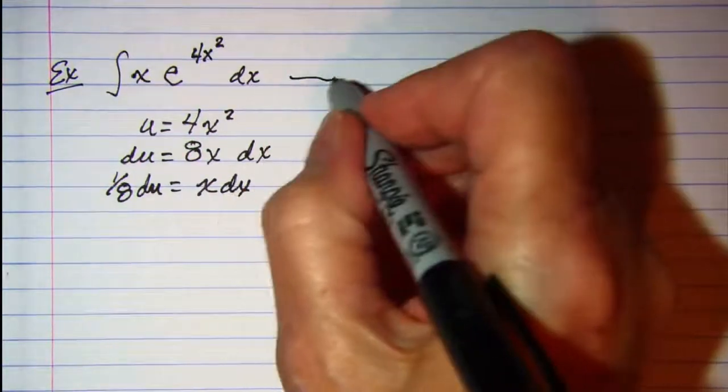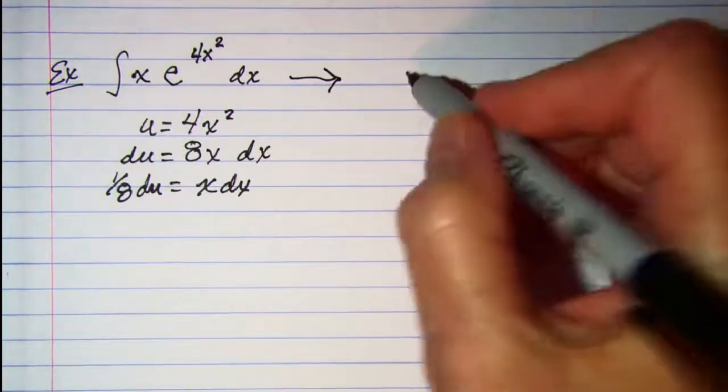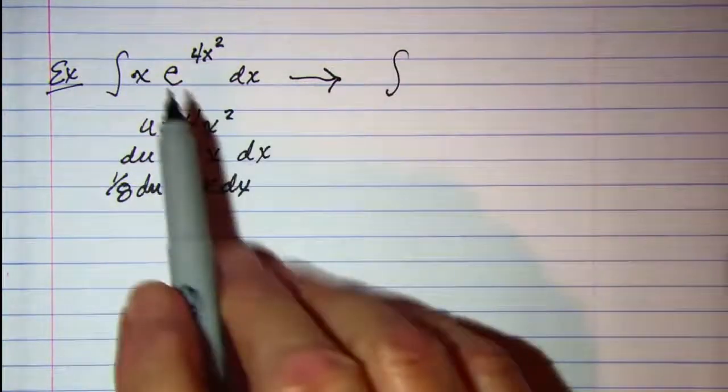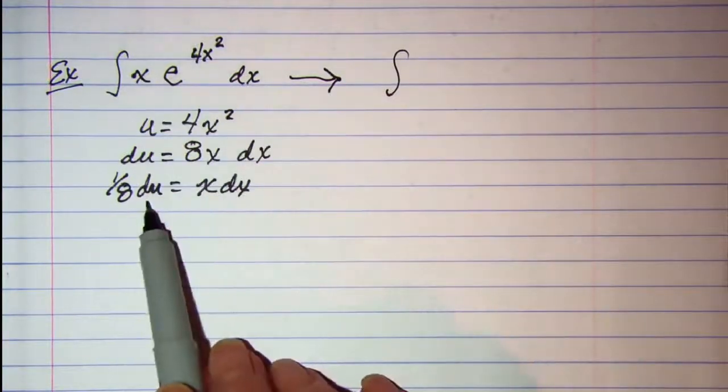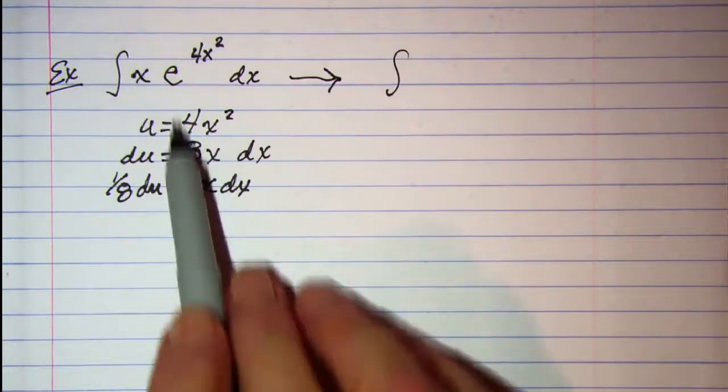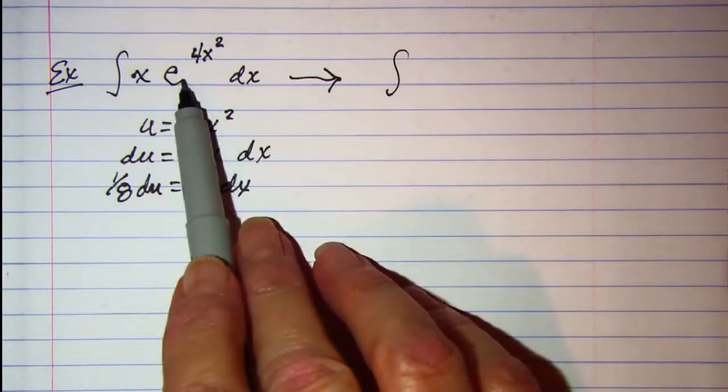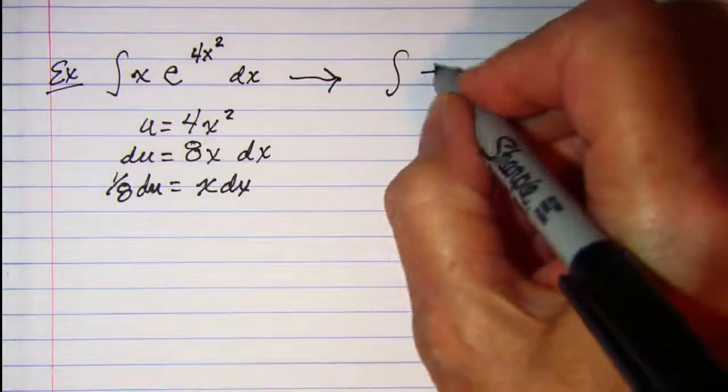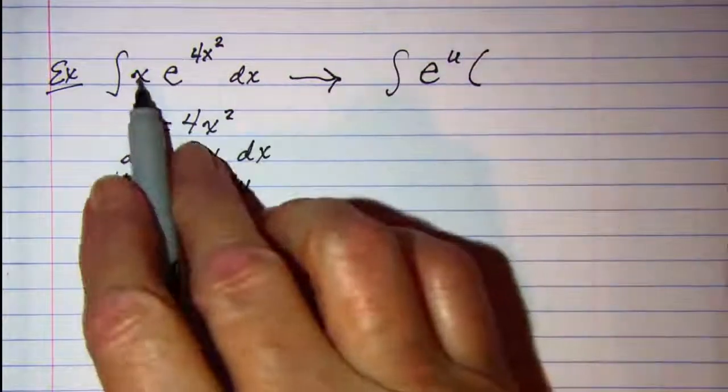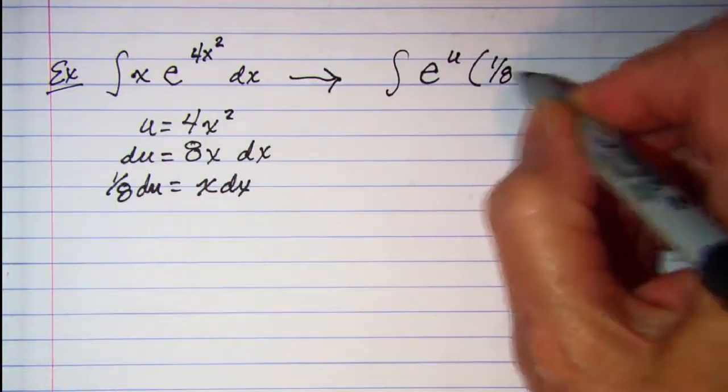Now I can do my u substitution. The integral: my x dx is 1 eighth du, so I'll save that for just a minute. My e is now going to be raised to the u, and then that x dx I'm going to put in 1 eighth du.